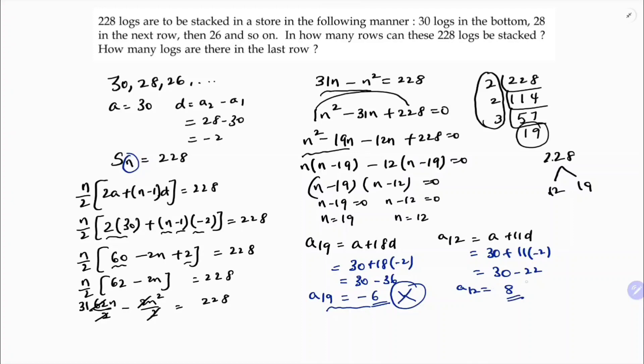So total, see now number of rows 19 is not possible, so number of rows are 12. And how many logs are there? Here they ask the question, how many logs are there in the last row? So in the last row there are 8 logs.